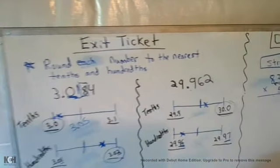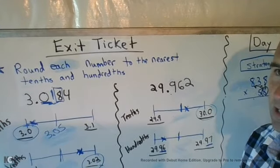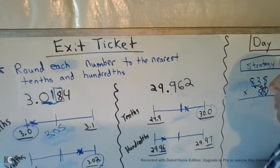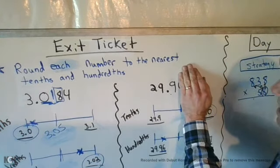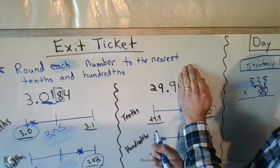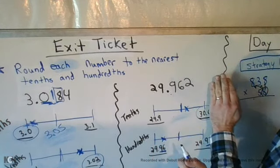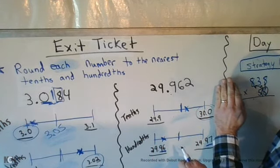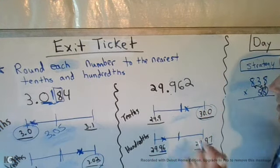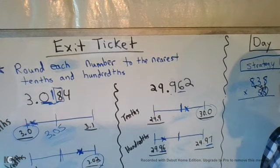Next, we have this number of twenty-nine and ninety-six hundredths, two-thousandths. My options here would be twenty-nine and nine-tenths when rounding to the tenths place, or one more than that would be thirty, or thirty and zero-tenths. When rounding it up, I would look at the hundredths place — five and above — so I would give it a shove up to thirty.